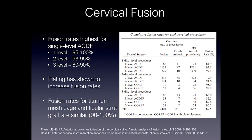In cervical fusion, rates tend to be highest for a single-level ACDF — 95% to 100% at one level. As you increase the number of levels operated on, fusion rates decrease. Plating has shown to increase fusion rates, which is why you'll see plates associated with most ACDFs. Fusion rates for corpectomies requiring titanium mesh cages and fibular strut grafts are similar, and fusion rates can be up to 90% to 100% as reported.